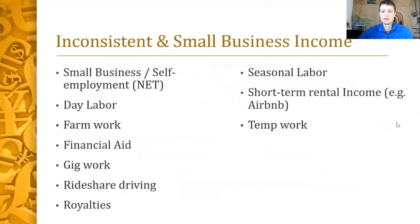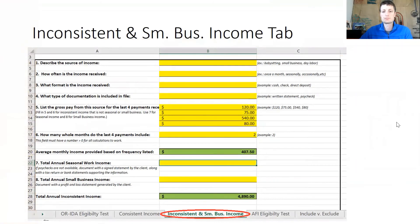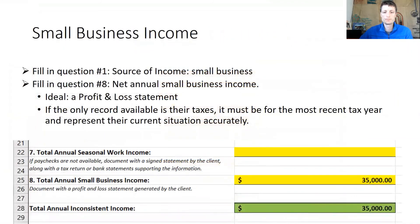Now on to the inconsistent and small business income tab. National data tells us that one in five households experiences income volatility — moderate to significant income fluctuations from month to month — so we should expect to navigate inconsistent sources of income. There are many boxes on this page that all feed into the main calculation; use a separate calculation box for each source of inconsistent income. For small business income, list the source as small business and fill in the net annual small business income. The ideal documentation is a profit and loss statement for an existing small business.